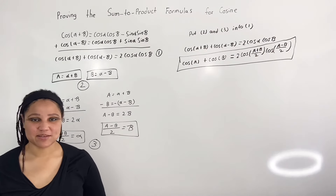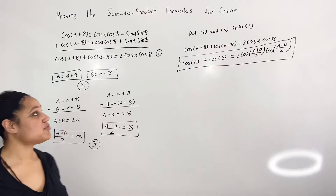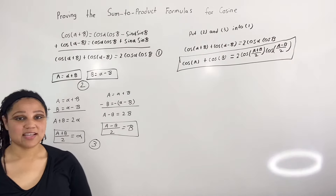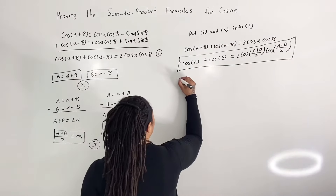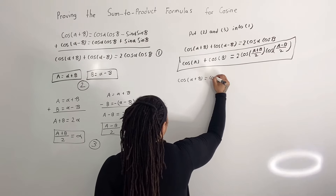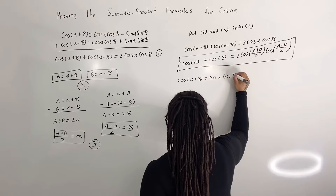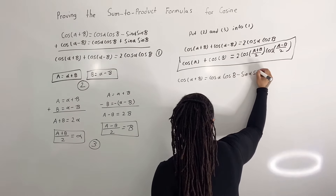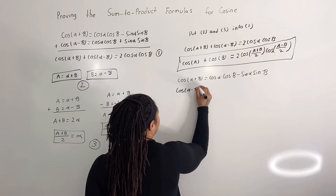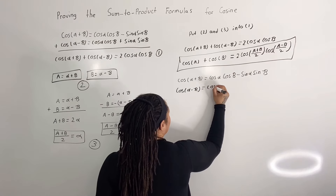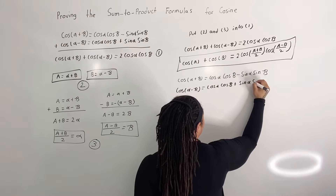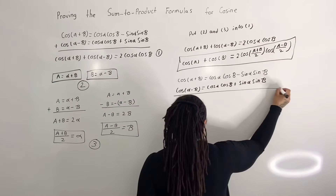Now let us find our second sum-to-product formula for cosine. We will do this by subtracting the difference formula for cosine from the sum formula for cosine. So we know that cosine of alpha plus beta is equal to cosine of alpha cosine of beta minus sine of alpha sine of beta, and we know that cosine of alpha minus beta is equal to cosine of alpha cosine of beta plus sine of alpha sine of beta. And now we're going to subtract the two equations.